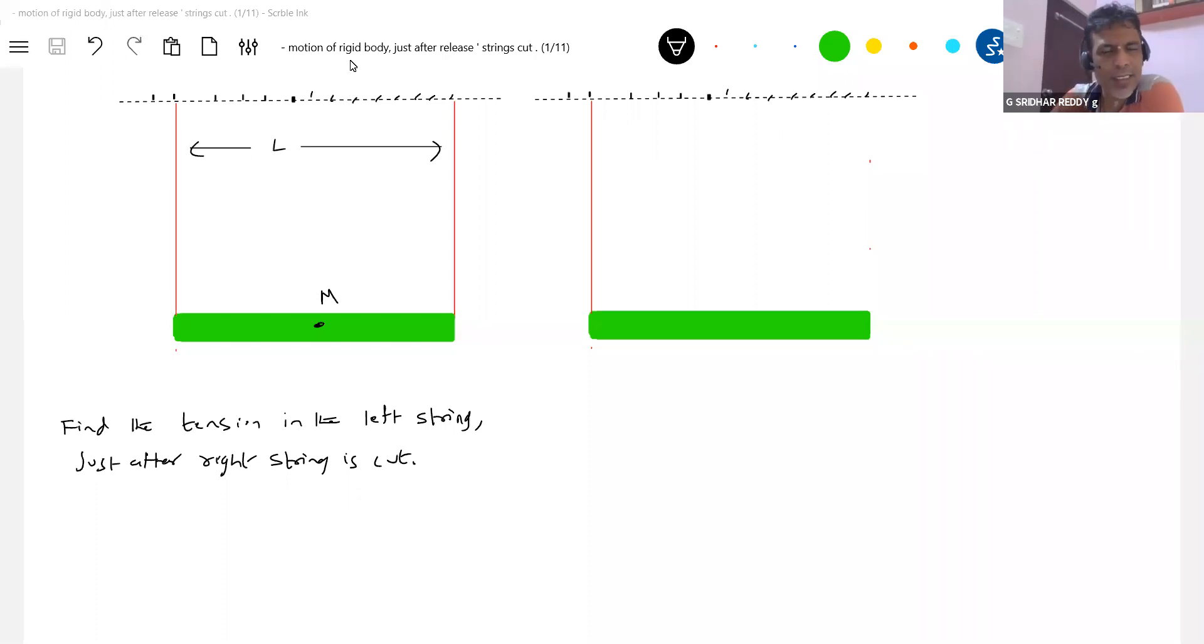Good morning, all of you. So today's class, we're going to discuss about the torque equal to I-alpha applications. What happens when a rigid body is suspended and suddenly one of the strings is cut, then how the motion of that object will occur.